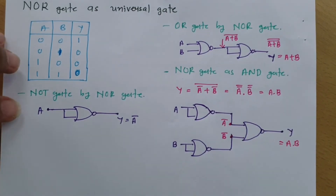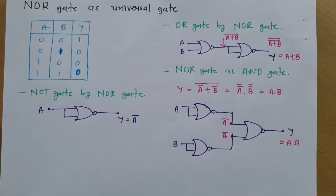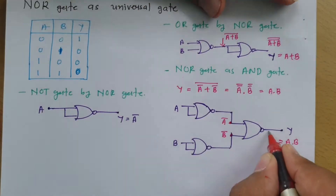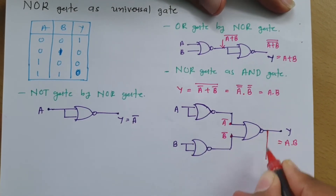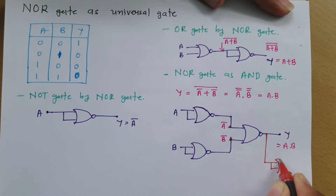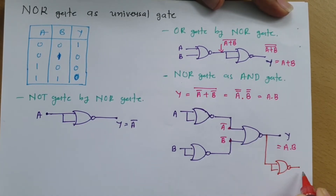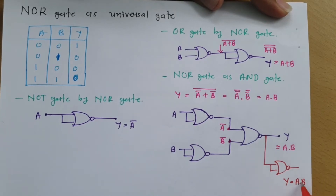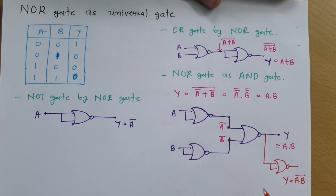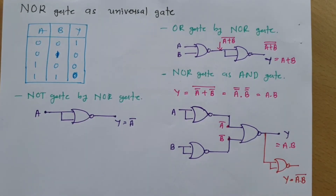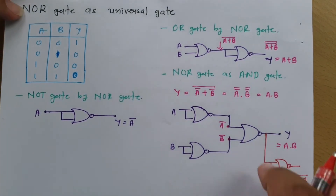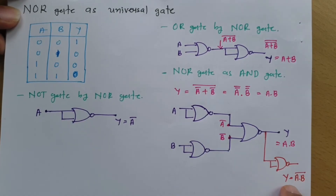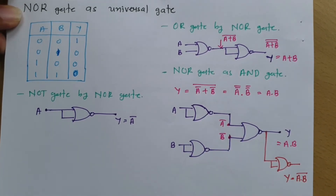If you want a NAND gate from NOR gates, starting from the AND gate configuration, simply connect one additional inverter at the output. That gives NOR gate as NAND gate.